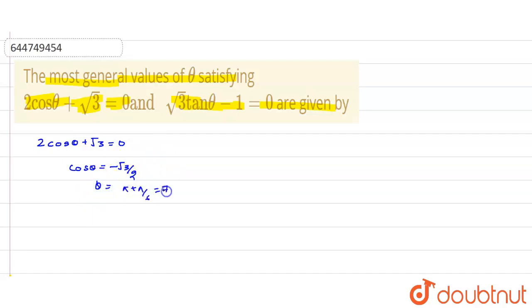And for tan theta, root 3 tan theta minus 1 equals 0, where tan theta equals 1 by root 3, where theta equals pi by 6.